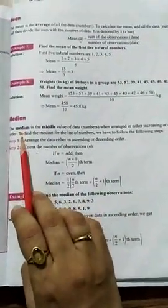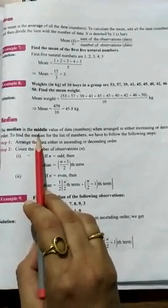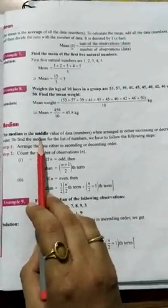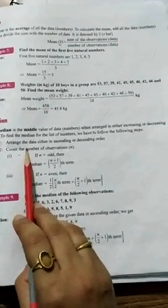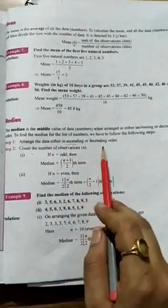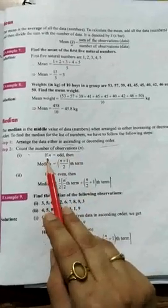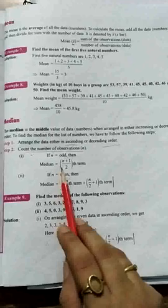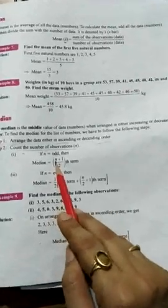Second is median. Median very simply means middle value. Whatever is the middle value, that is the median. Now for calculating median there is one step: arrange the data either in ascending order or in descending order. And then we can count the number of observations, that is n. So if n is odd, in that case we can use the formula n plus 1 divided by 2. In place of n you can put the number of terms. That term we have to take.